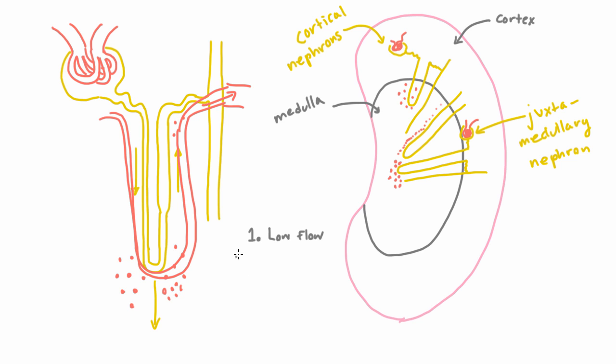So the first solution was low flow, and the second one is that it follows a loopy path.